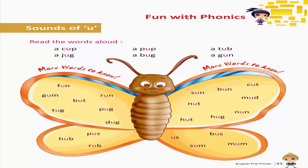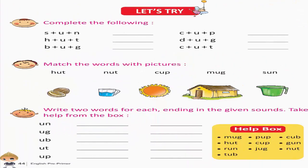Fun with phonics — Sounds of U. Read the words aloud: A cup, A jug, A pup, A bug, A tub, A gun. More words: Fun, Gum, Run, Tug, Pug, Dug, Hub, Rub, Cut, Bun, Sun, Mud, Nut, Nun, Hug, Hut, Bus, Us, Mum, Some. Let's try — Complete the following. Match the words with pictures. Write two words for each ending in the given sounds.